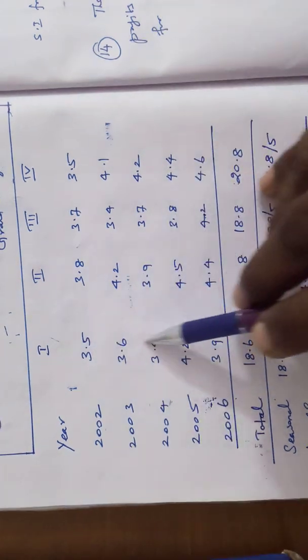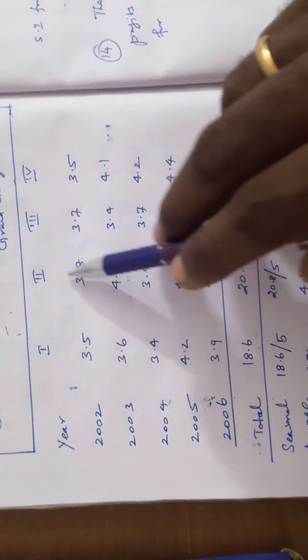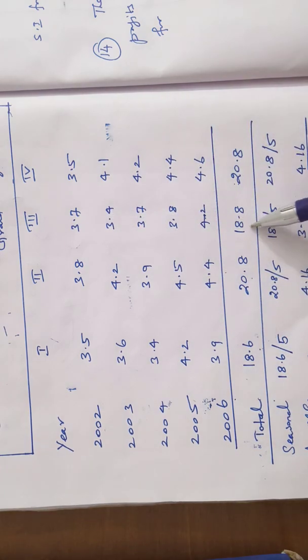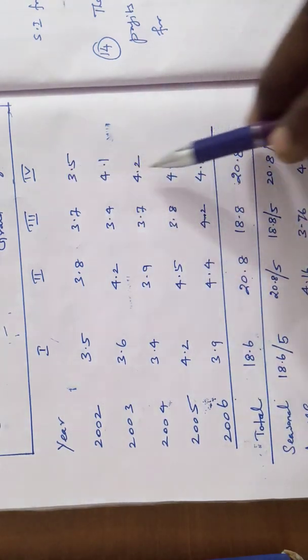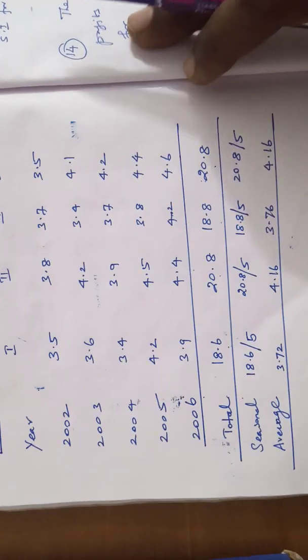First quarter, adding the first quarter value is 18.6. Second quarter total is 20.8. Third quarter total is 18.8. The fourth quarter total is 20.8.